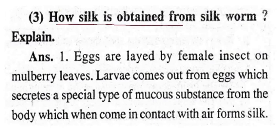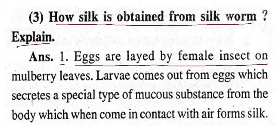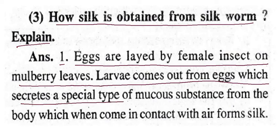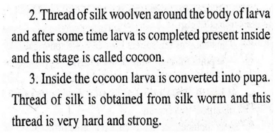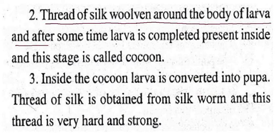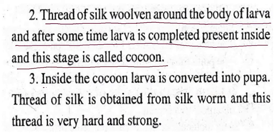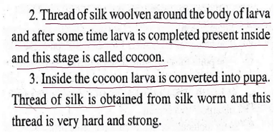How is silk obtained from the silkworm? Eggs are laid by female insects on mulberry leaves. Larva comes out from the egg, which secretes a special type of mucus substance from its body. After some time, the larva is completely present inside, and this stage is called a cocoon. Inside the cocoon, the larva is converted into a pupa, and the thread of silk is obtained from the silkworm — this thread is very hard and strong.